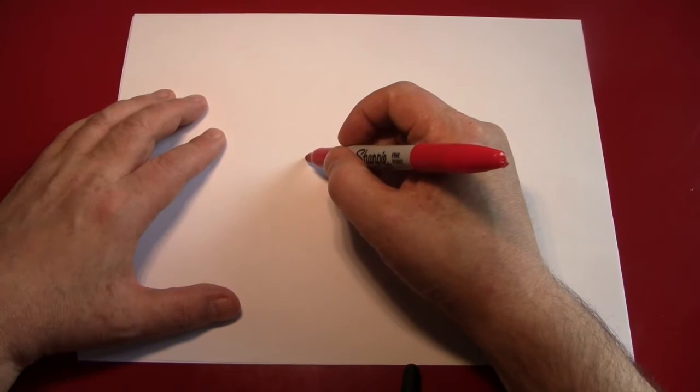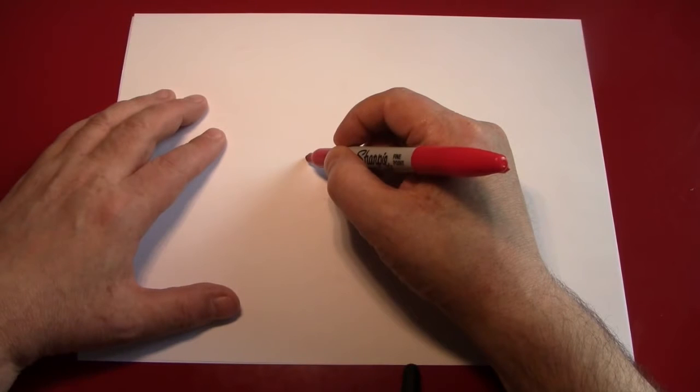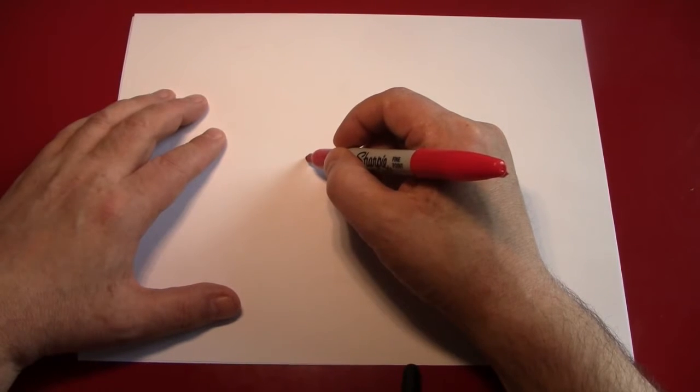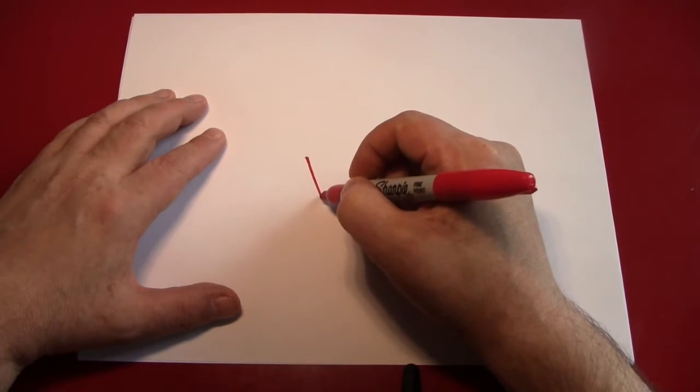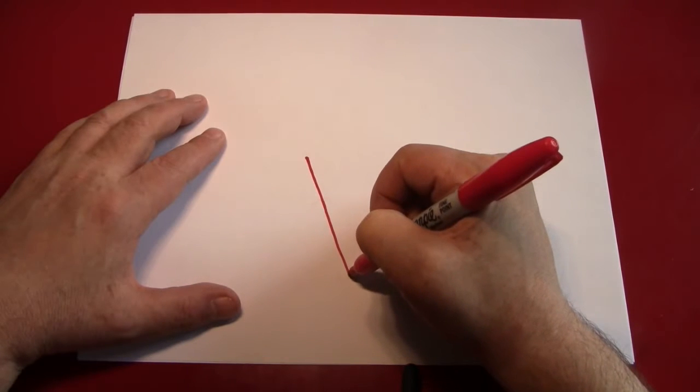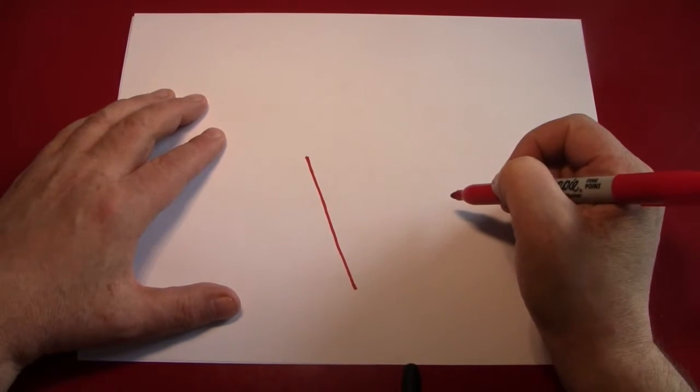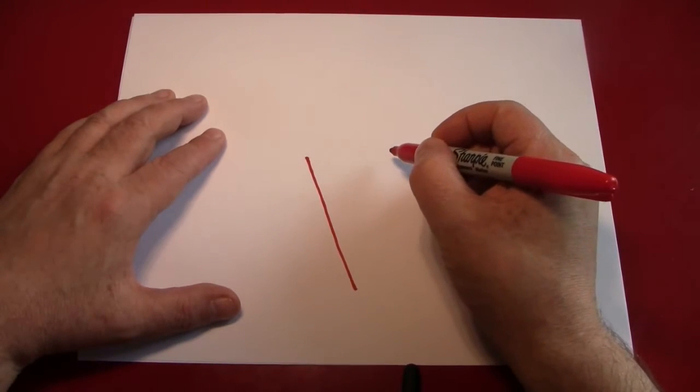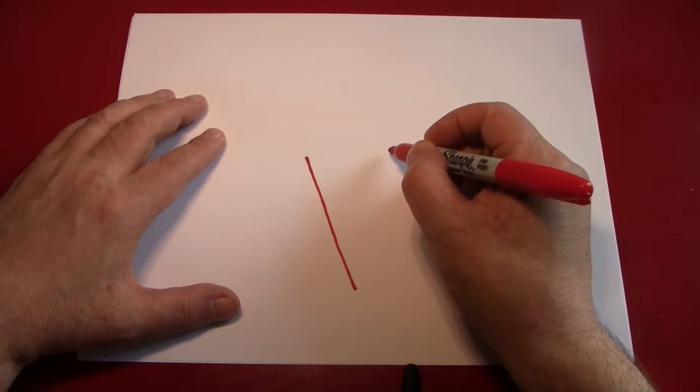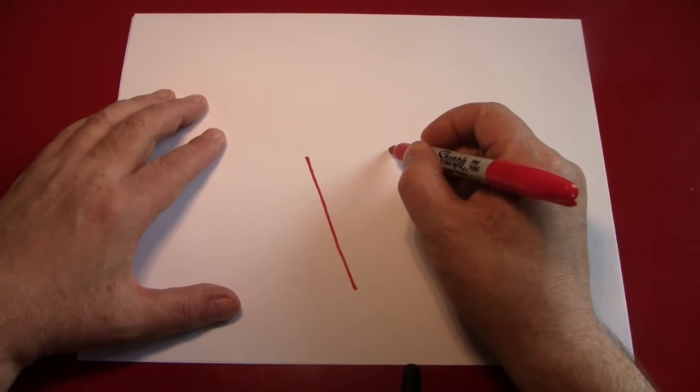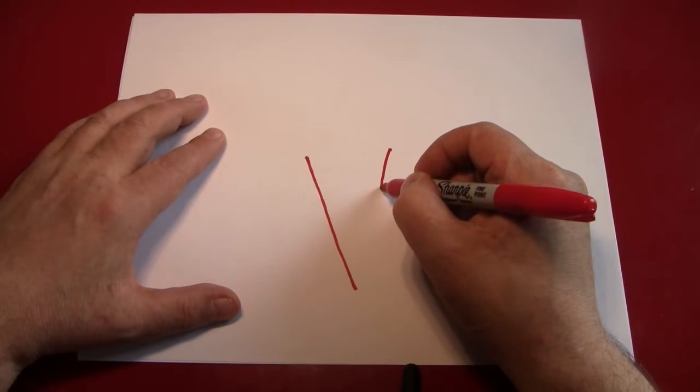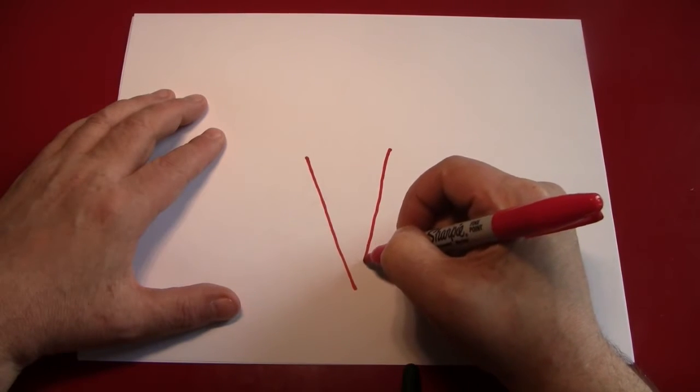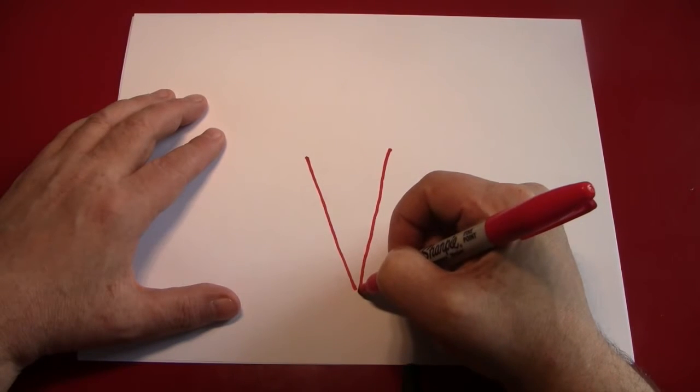We'll start a little bit above the middle of the page, or the middle if that's what you prefer, and make a slanted line like that. Then we'll come over a little bit to the right here and make another slanted line that meets the first line at the bottom. There we go.